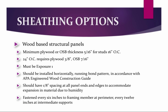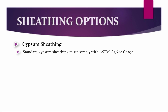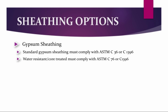Panels shall be fastened every 6 inches to the framing member at the perimeter and every 12 inches at any intermediate supports. Gypsum sheathing is also an acceptable option. Standard gypsum sheathing must comply with ASTM C36 or C1396, and water-resistant core-treated gypsum must comply with ASTM C79 or C1396. Glass mat gypsum sheathing must comply with ASTM C1177.